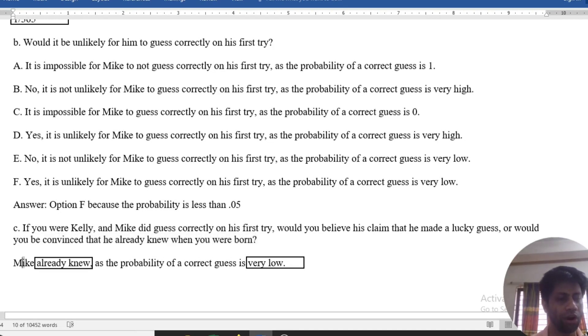Mike already knows. Mike knows that the probability he can guess her birthday is very low, because on the first guess, the probability is 1 by 365.